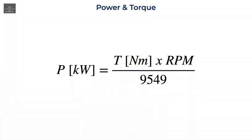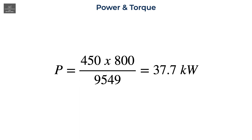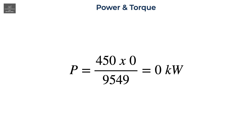Power is simply a function of torque and angular velocity, or RPM. In metric units, power in kilowatts equals torque in newton-meters multiplied by RPM, divided by 9549. As an example, if torque is 450 newton-meters and RPM is 800, then the power is 37.7 kilowatts. Because of this, if the wheel with greater resistance is not spinning, its angular velocity or RPM is zero. Therefore, multiplying zero by any amount of torque still equates to zero power, and no power is actually being transmitted to that stationary wheel.